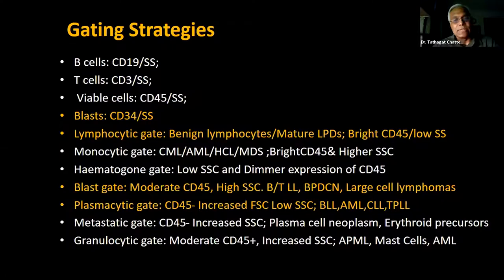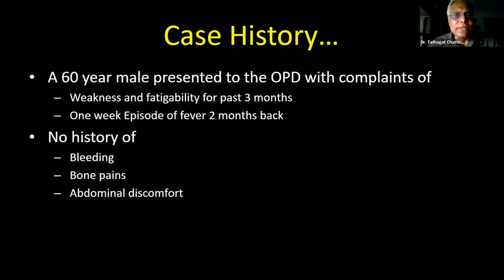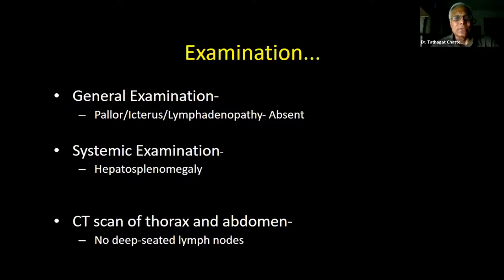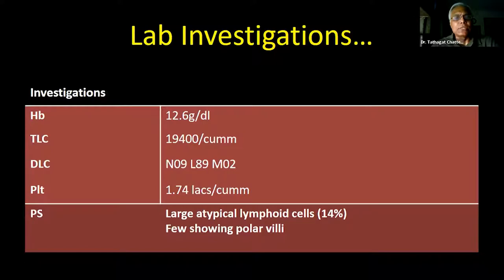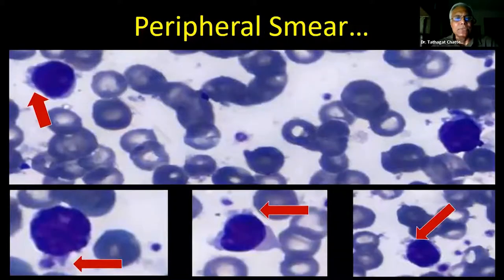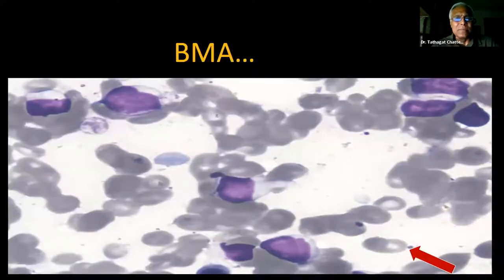First case: a 60-year-old male presenting with weakness, fatigability for three months, fever for two months, no history of bleeding, bone pains, or abdominal discomfort. General examination was normal. Systemic examination revealed moderate hepatosplenomegaly. CT scan did not reveal any deep-seated lymph nodes. Labs showed TLC of 19,400 with absolute lymphocytosis and large atypical lymphoid cells showing polar villi on peripheral smear. Bone marrow aspirate showed similar blastoid-looking cells with polar cytoplasmic projections.